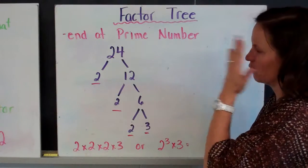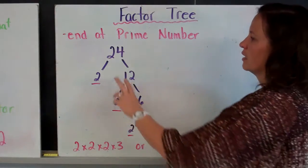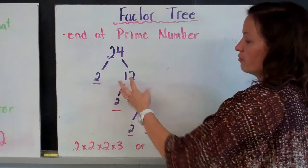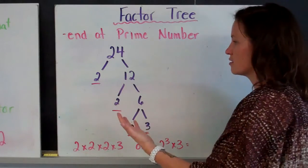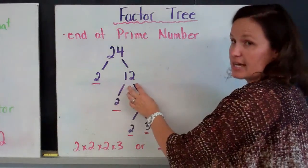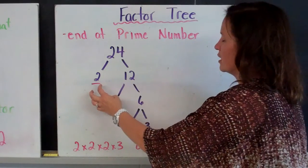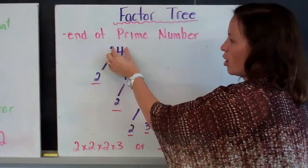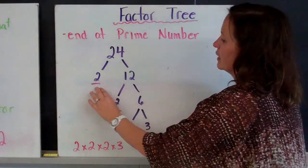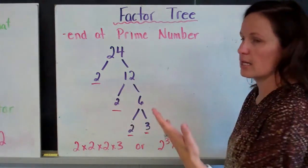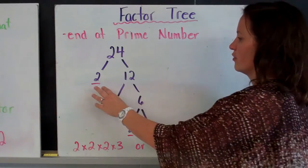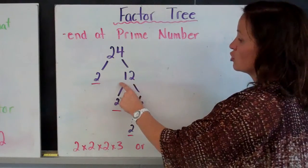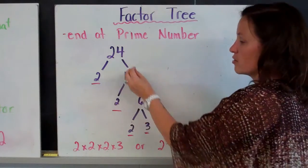Now you know you've completed your factor tree when you get to a prime number. And we'll talk a little bit more about what prime numbers mean on the next slide. So again, I'm starting with 24. And I can start with 2 times 12. I don't have to start with 2 times 12. I can start with 4 times 6 or 3 times 8. Any two factors that their product equals my starting number. Now 2 is a prime number because it is only divisible by 1 and itself. So I can stop there, and I've identified that with a little line.